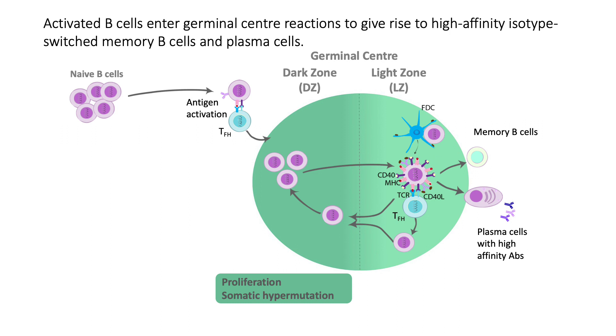Alternative splicing plays a major role in the differentiation of immune cells. Although the role of alternative splicing has been studied extensively in T cell differentiation, its role in B cell maturation and activation is less characterized.